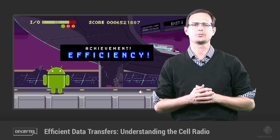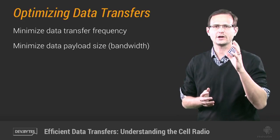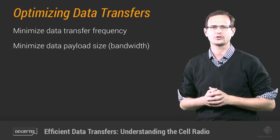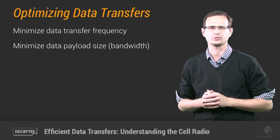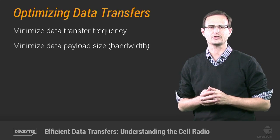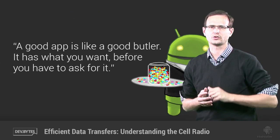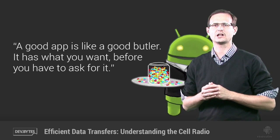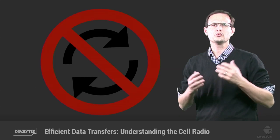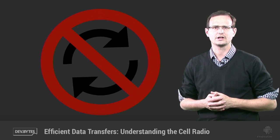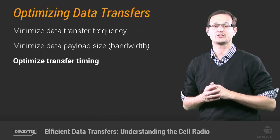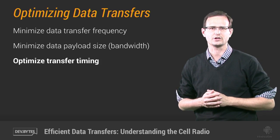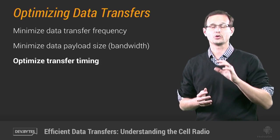Now on the surface, this seems like a pretty simple challenge. If the cell radio drains the battery, just transfer as little data as possible, as infrequently as possible. That's a good start, but we want to balance that with providing a great user experience — one where the data your users need is available as soon as they need it without them ever needing to hit refresh. That requires understanding how to optimize the timing of your data transfers.